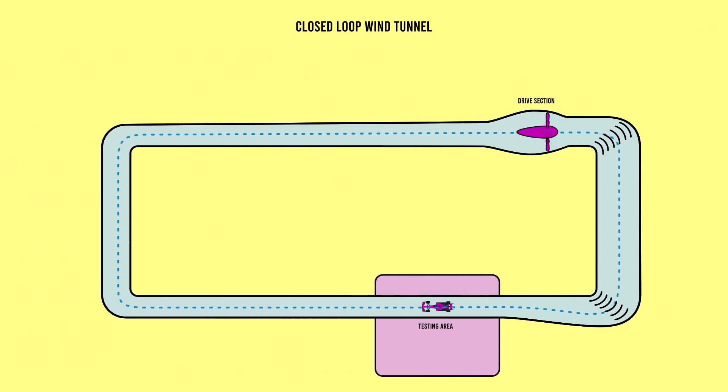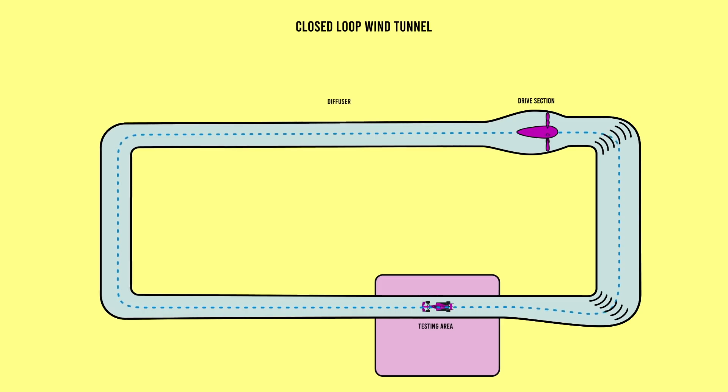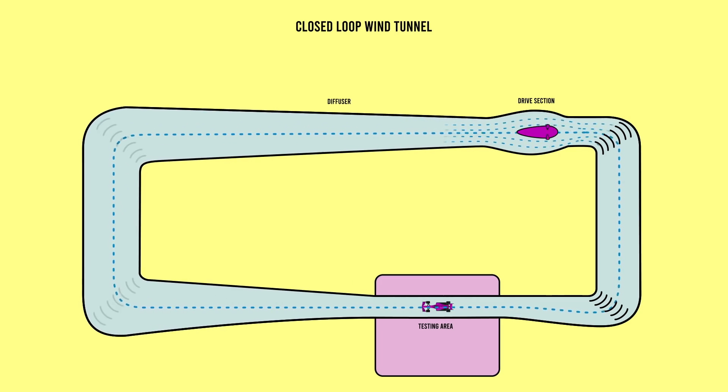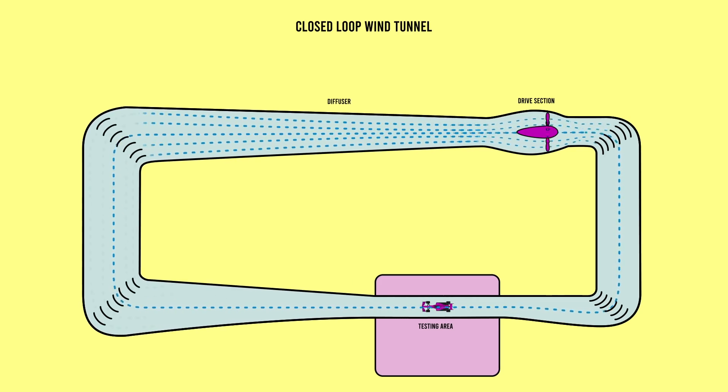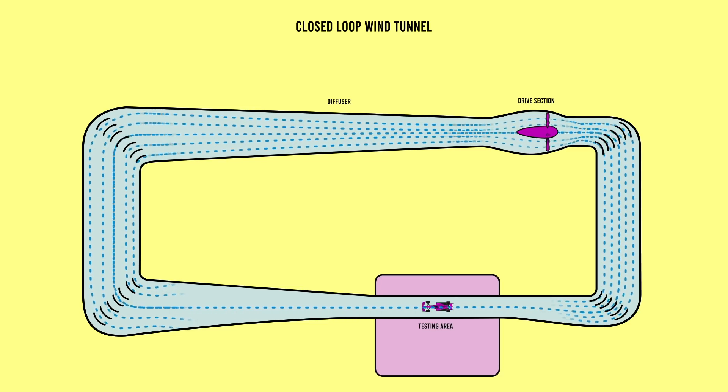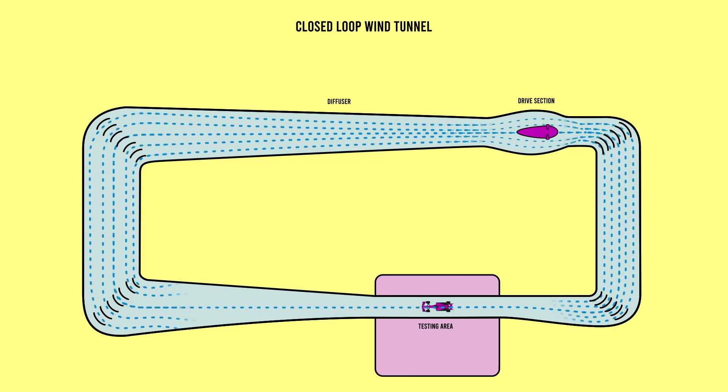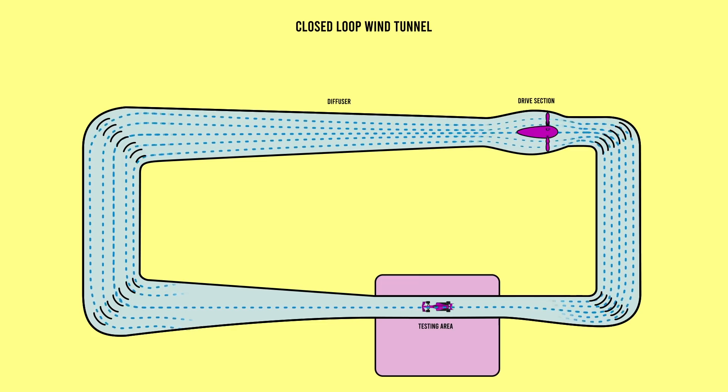After the air is accelerated through the drive section it enters a diffuser, a widening of the tunnel. A wider tunnel means slower air which is easier to control and keep smooth right through the testing section. The words smooth and airflow are going to lose all meaning pretty soon.